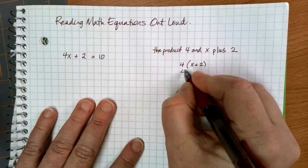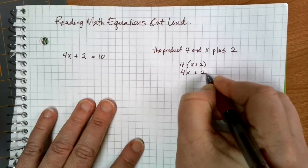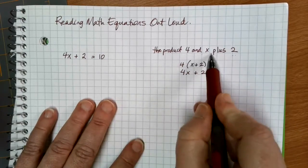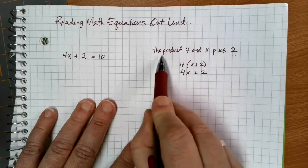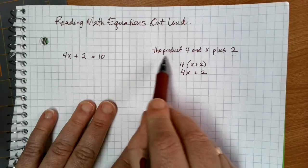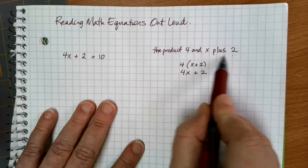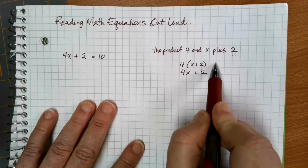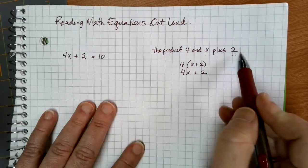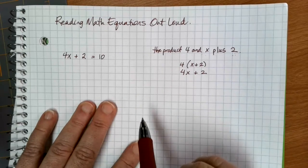So am I finding the product and then plusing 2 afterwards? So this type of wording, the product of 4 and x plus 2, is not very clear because am I doing 4 and x plus 2 or am I doing the product of 4 and x and then plusing 2 to that? So these two are both options that could be interpreted with that type of wording.